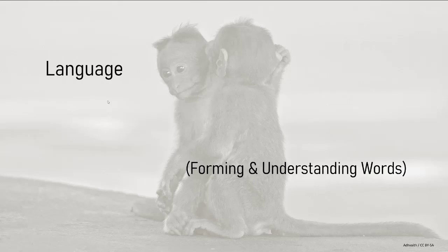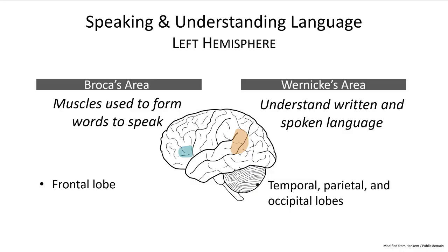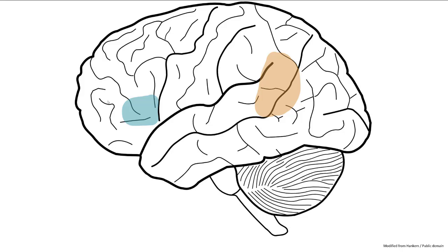Creating and understanding language uses several interconnecting parts of the brain. Broca's area in the frontal lobe controls the muscles used to speak, including airway and respiratory muscles, vocal cords, and formation of the shape of the mouth and placement of the tongue. The formation and understanding of words both occur on the left hemisphere. Wernicke's area, in the region including the temporal, parietal, and occipital lobes, is where somatic, visual, and auditory information come together to understand language in written or verbal form. These two areas are interconnected.